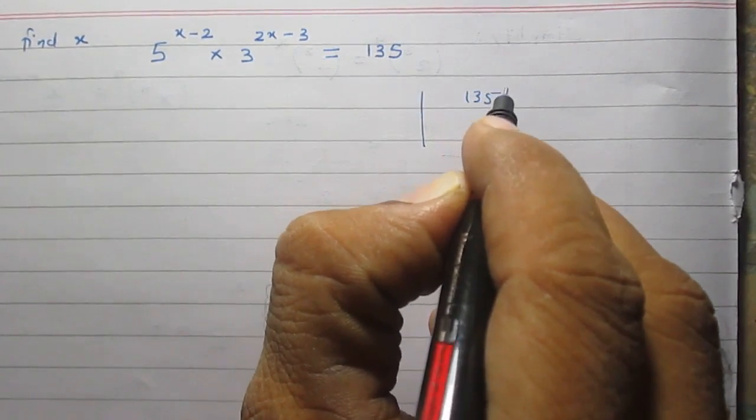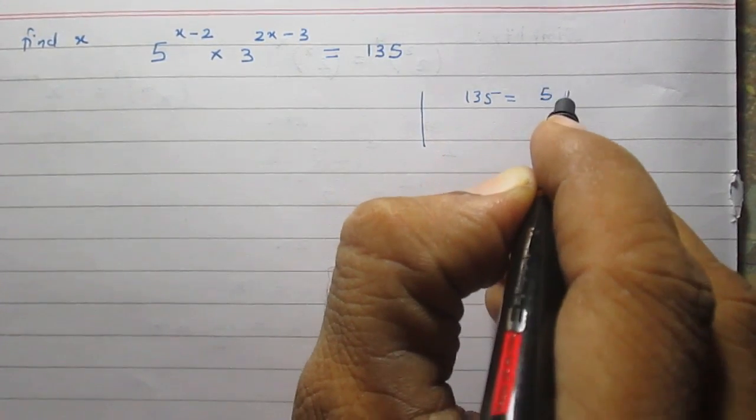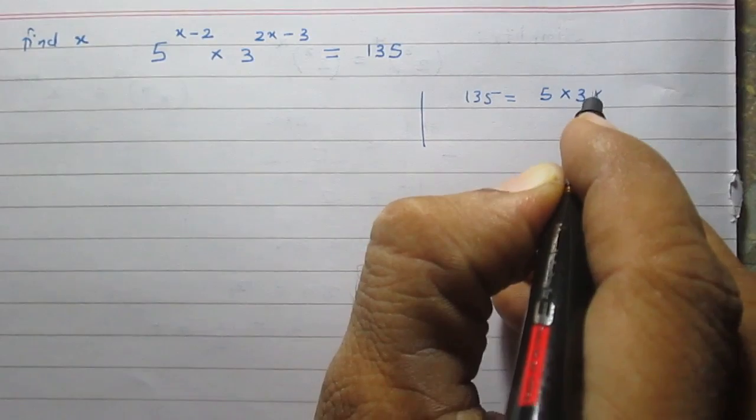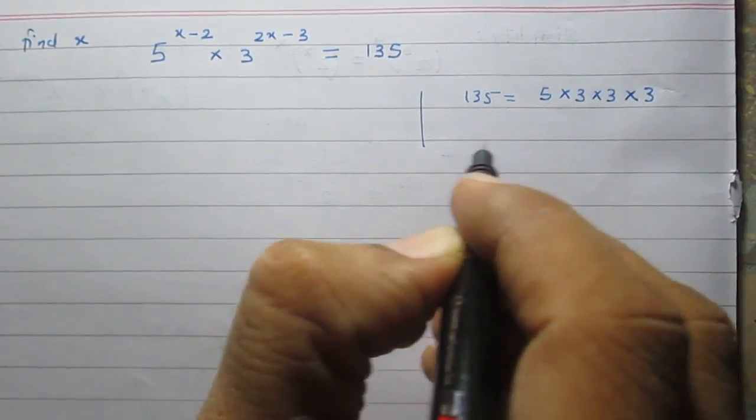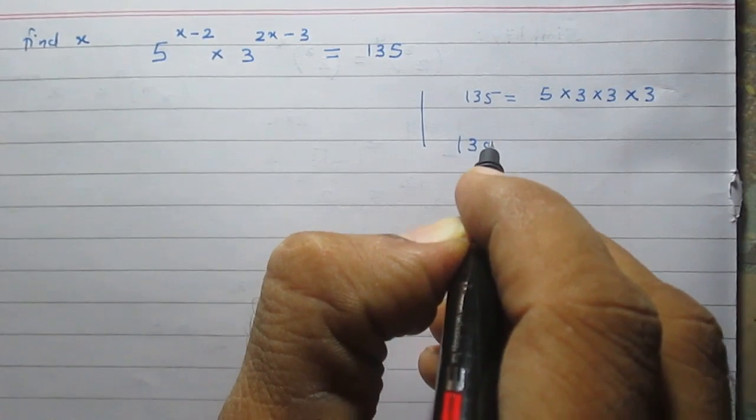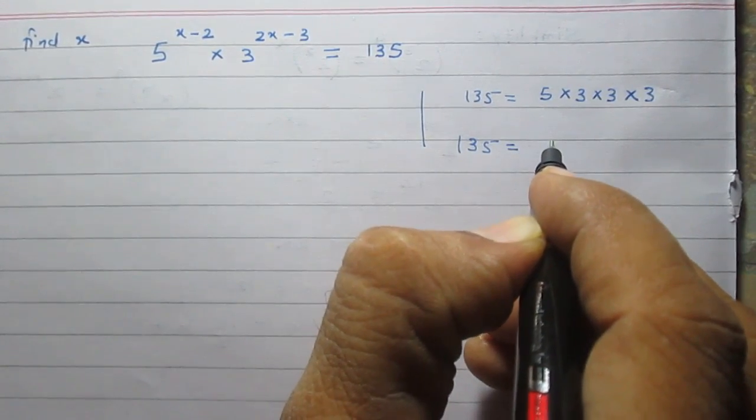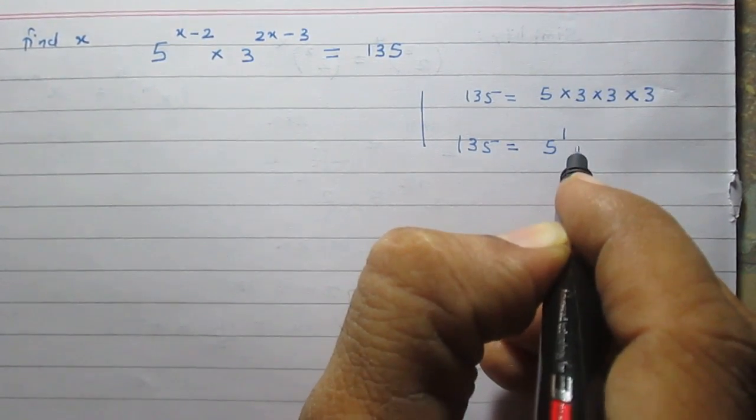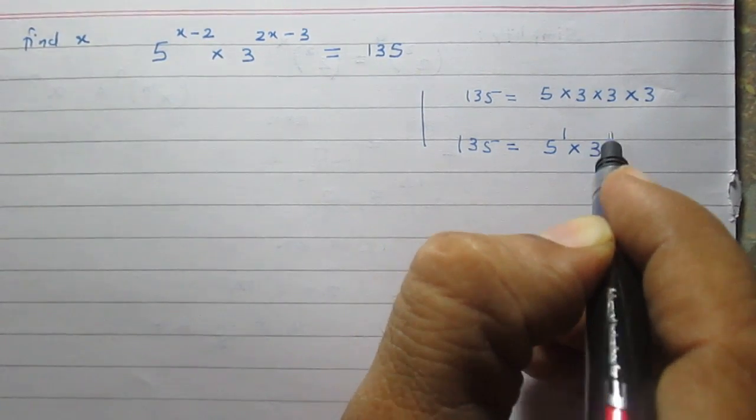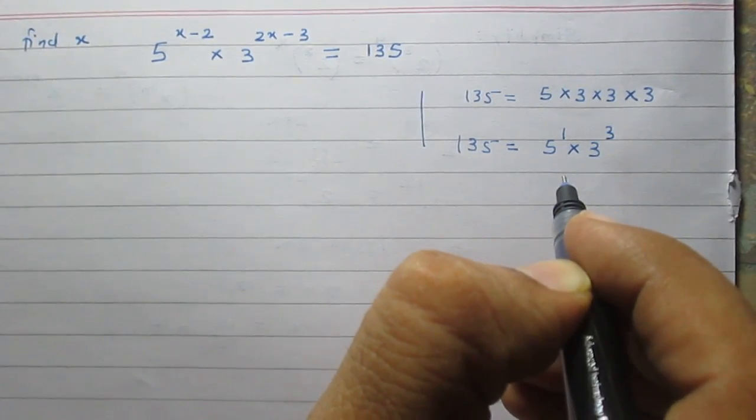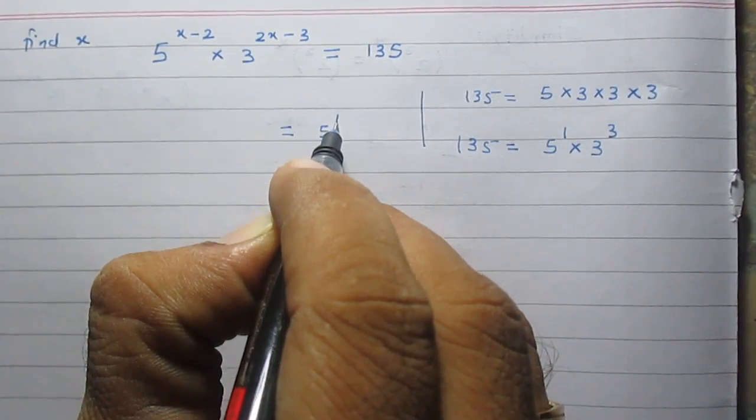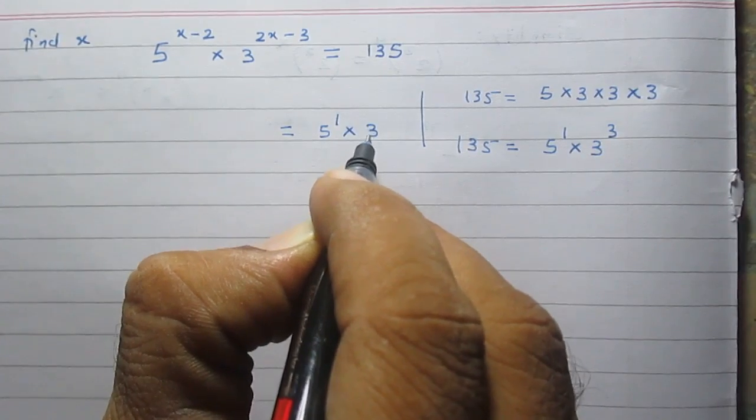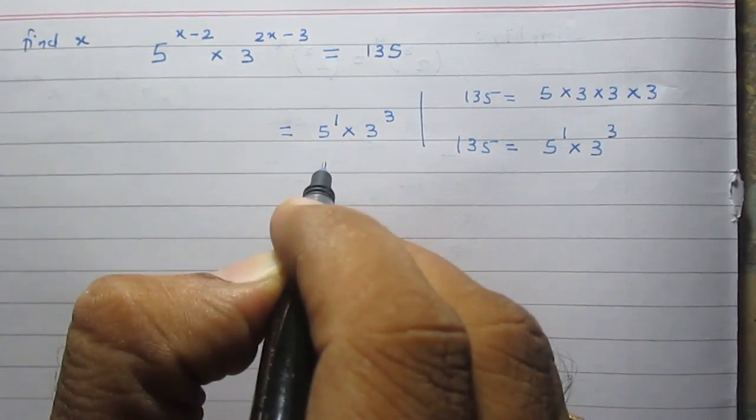135 is equal to 5 multiplied by 3 multiplied by 3 multiplied by 3. So 135 can be written as 5 raised to the power 1 multiplied by 3 raised to the power 3.